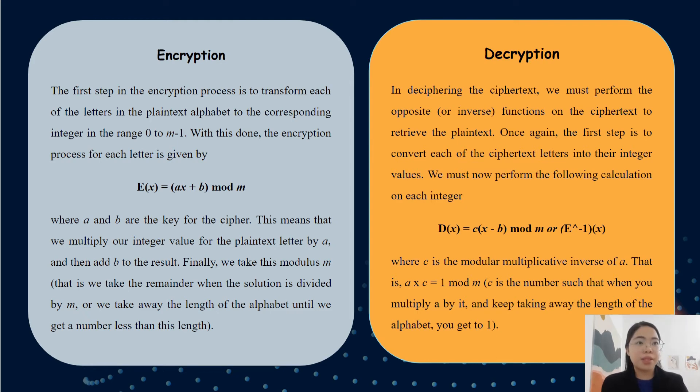For the decryption, in deciphering the ciphertext, we must perform the opposite function on the ciphertext to retrieve the plaintext. Once again, the first step is to convert each of the ciphertext letters into their integral values. We must now perform the following calculation on each integral. So the formula is D(X) equals C times (X minus B) mod M, or E to the power of minus 1 times X, where C is the modular multiplicative inverse of A. That is A times C equals to 1 mod M.